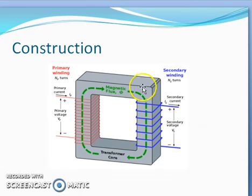The flux in the iron core links not only with the secondary winding but also with the primary winding, producing self-induced EMF in the primary. This induced EMF opposes the applied voltage and is therefore known as back EMF of the primary.